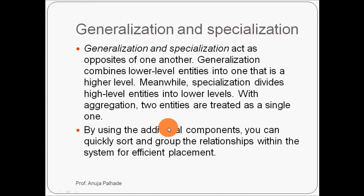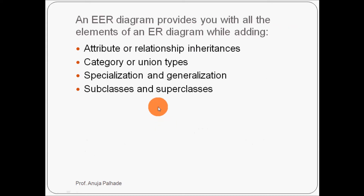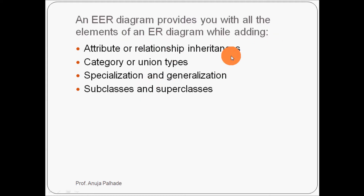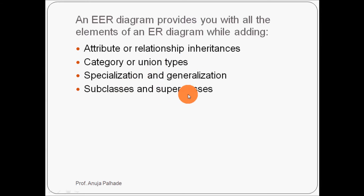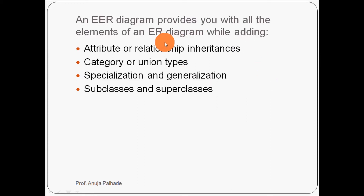To see here in this video, step by step: an EER diagram provides you with all the elements of an ER diagram while adding attribute relationship inheritances and how to manage them, then category upon the union types, then subclasses and superclasses, then specialization and generalization. Apart from this, we are going to see aggregation also.